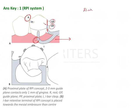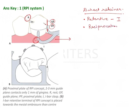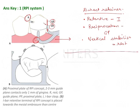Reviewing the direct retainer criteria: the retentive terminal (retentive arm) is the I-bar, reciprocation is provided by the guide plane, and vertical stabilization is provided by the rest. All three criteria are relevant to the RPI system. A few key facts to remember: RPI was introduced by Crowell in 1973 and later developed further.